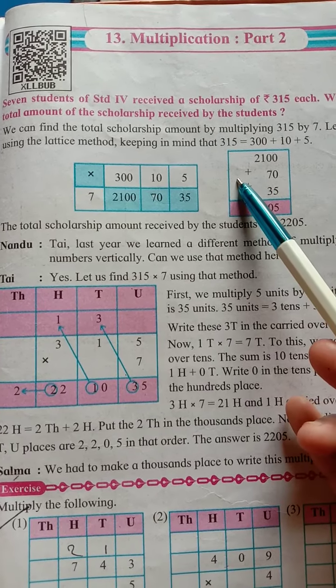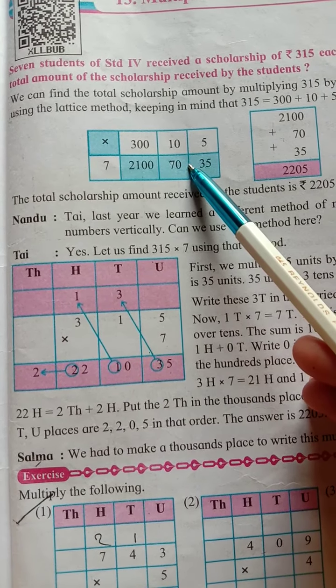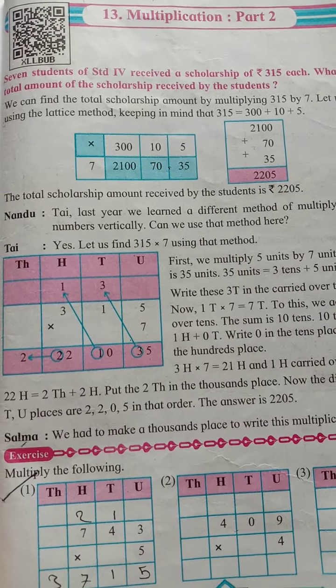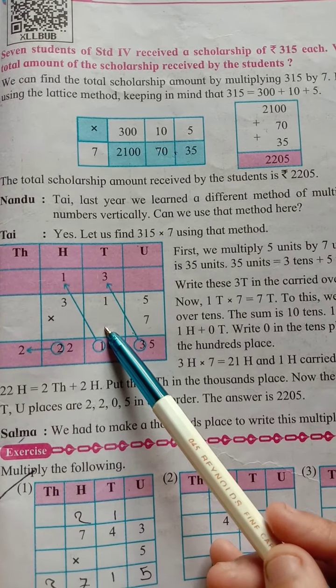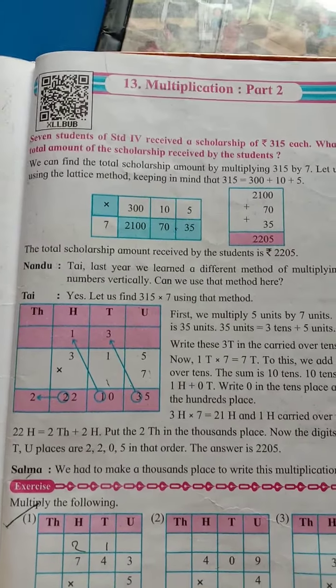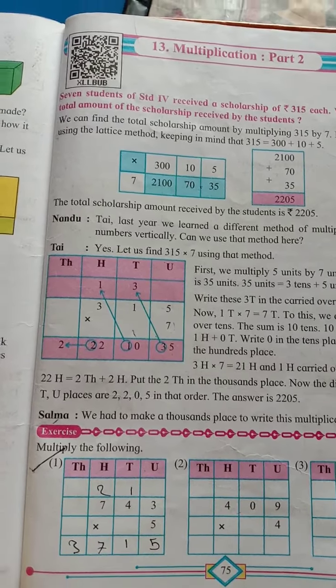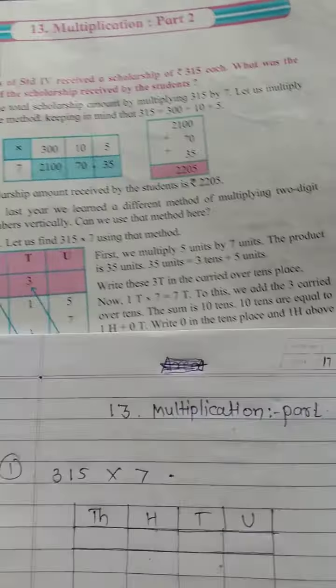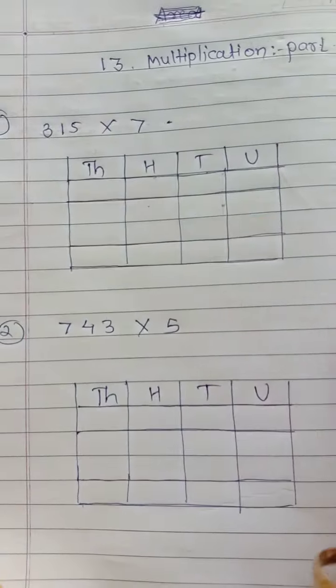We have all these lactic methods solved. Remember, this is the lactic method. Now, we are going to solve our sum using this method. Last year, we learned this method. Today, this year, now, a different method of multiplying two digit numbers vertically. Last year, we studied this one. Today, this year, we are going to study how to solve this sum using this different method.